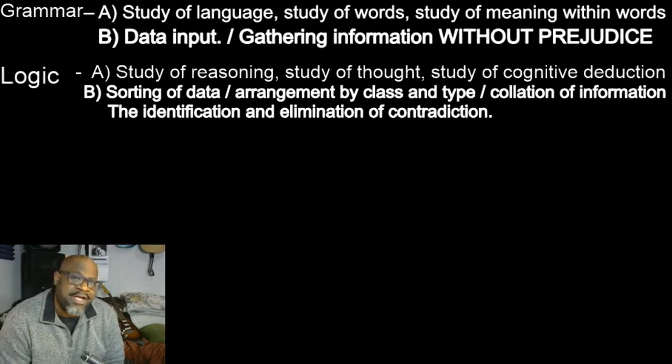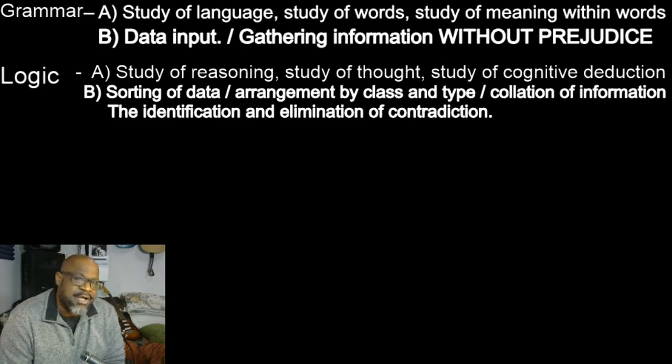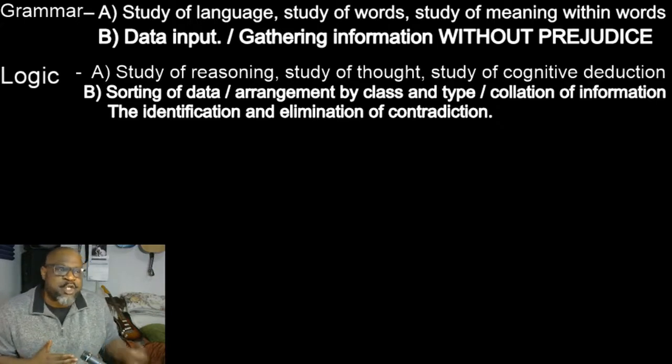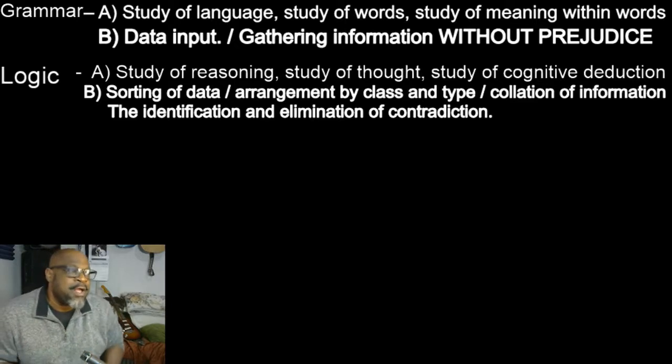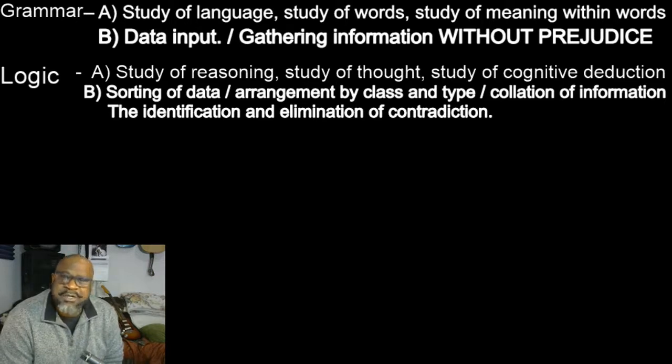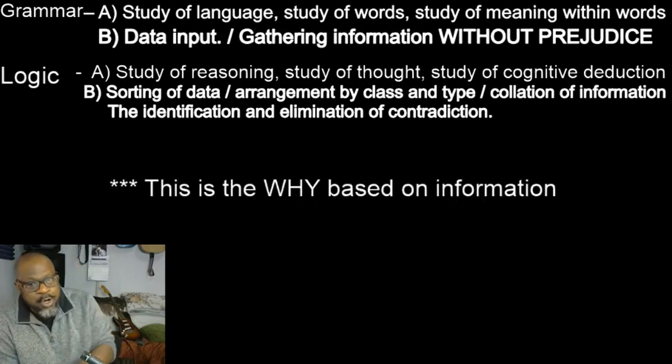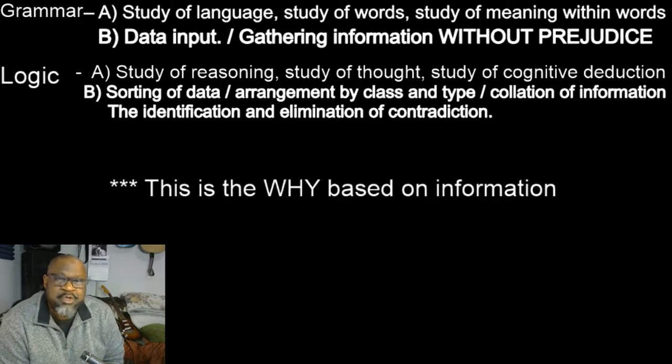In this step, we perform analysis on the data we collected in the first step. Often, we find it necessary to return to information gathering based on revelations made during the sorting, arrangement and correlation. This is also the step where special emphasis must be made to the identification of contradiction. Put simply, a contradiction is either a lie or a misunderstanding. Now, this is the why based on information.